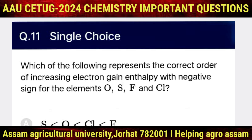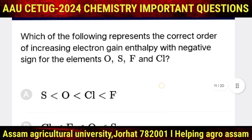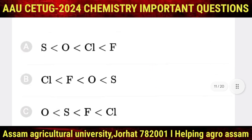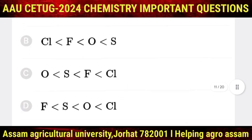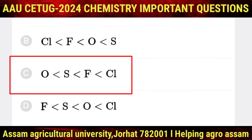Question number 11: which of the following represents the correct order of increasing electron gain enthalpy with negative sign for oxygen, sulfur, fluorine, and chlorine? The correct option is C: O < S < F < Cl.